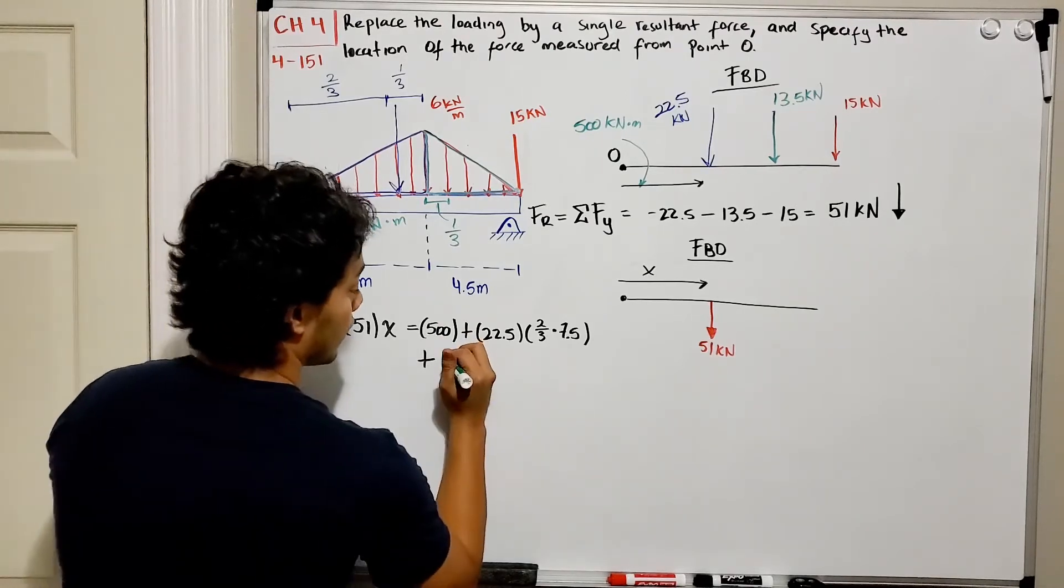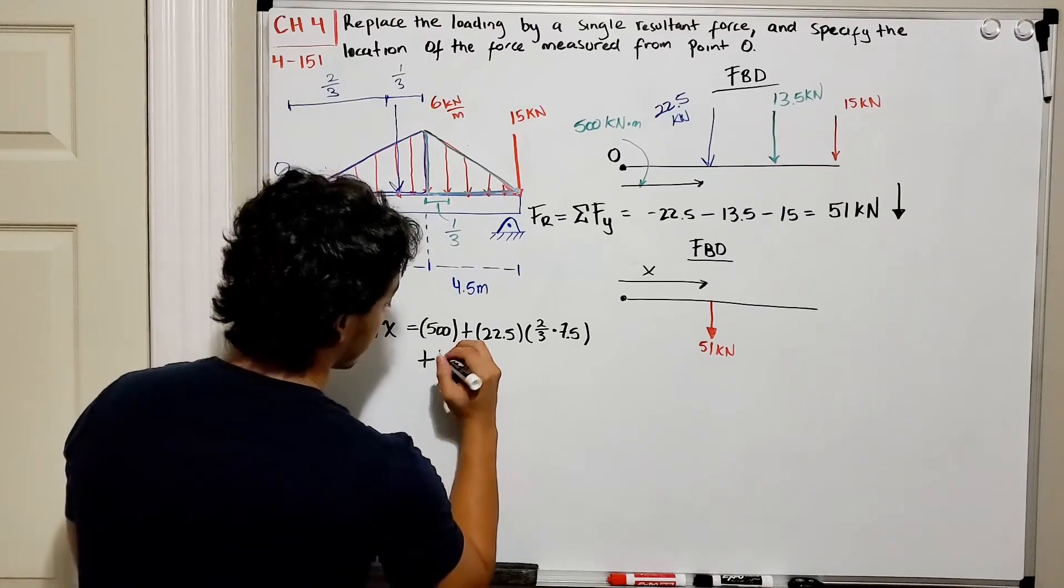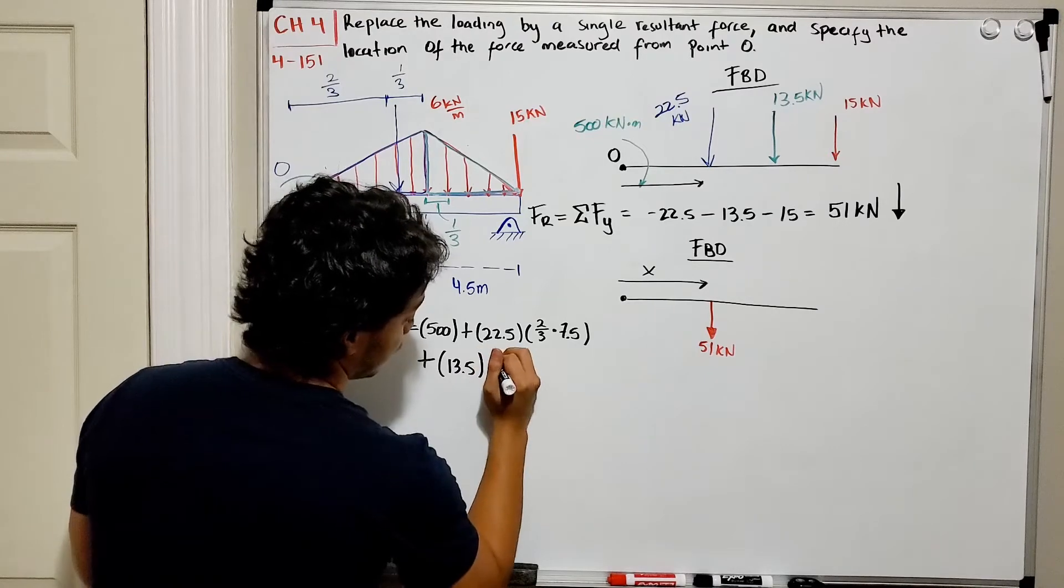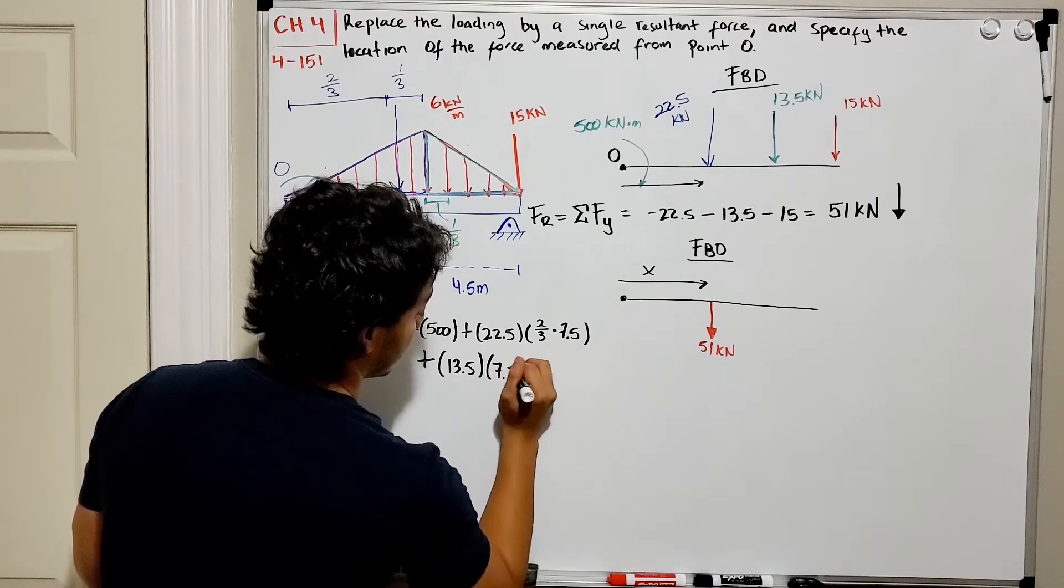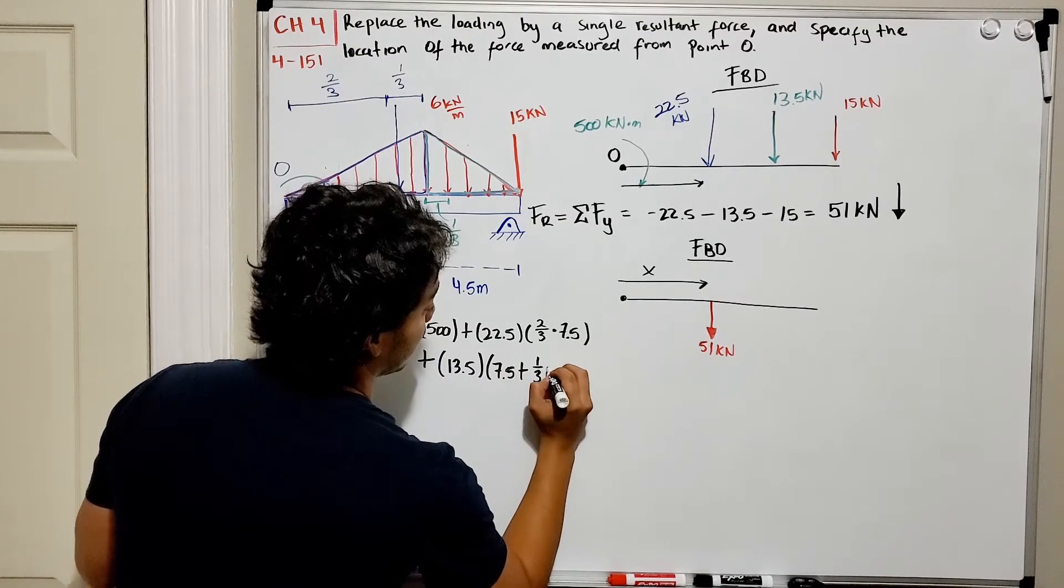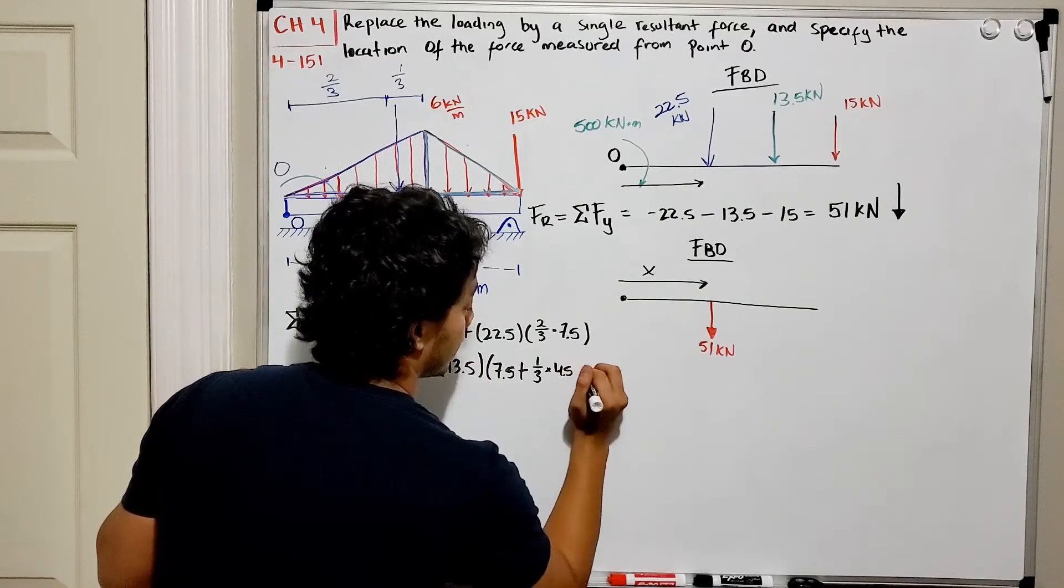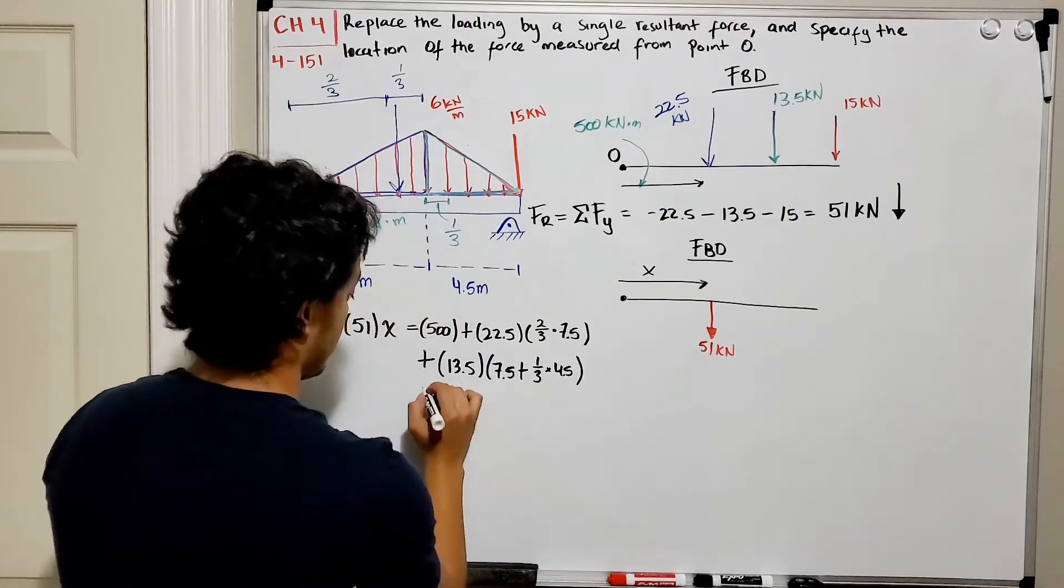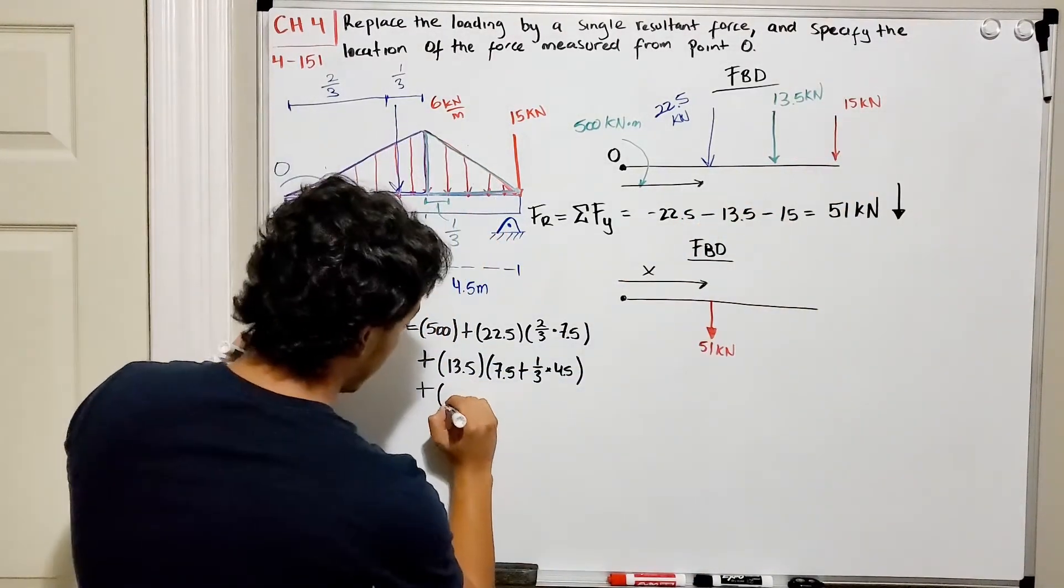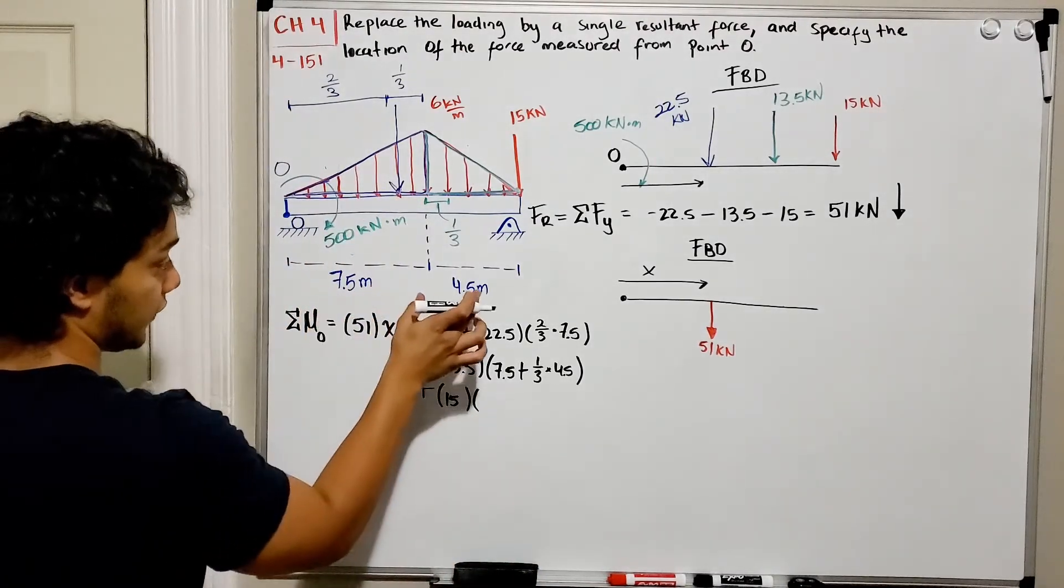So we're gonna multiply our force which is equal to 13.5 multiplied by 7.5 plus one-third of 4.5.